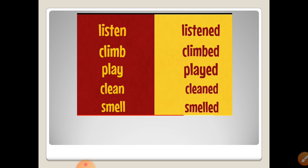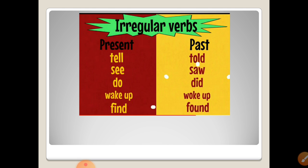In Arabic: We have verbs that convert from present to past by adding -ed. We have other verbs called irregular verbs that don't add -ed, but have their second form that we memorize, like irregular verbs in present tell past told, see saw, do did, wake up woke up, find found. These are all in past simple, meaning in the past.